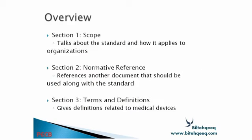Basically, it is similar to ISO 9000 quality management system. As we go further, we have different sections and we will overview these sections. Section 1 covers the scope — it talks about the standard and how it applies to the organization. Section 2 covers normative references and every document that should be used along with the standard. Section 3 covers terms and definitions, giving definitions related to medical devices.